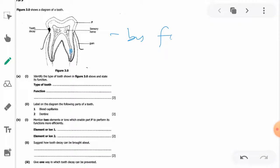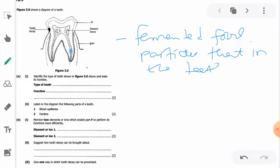food particles. In short, I'll just do this: tooth decay is as a result of fermented food particles that remain in the teeth gaps, producing acid which eats up the enamel.